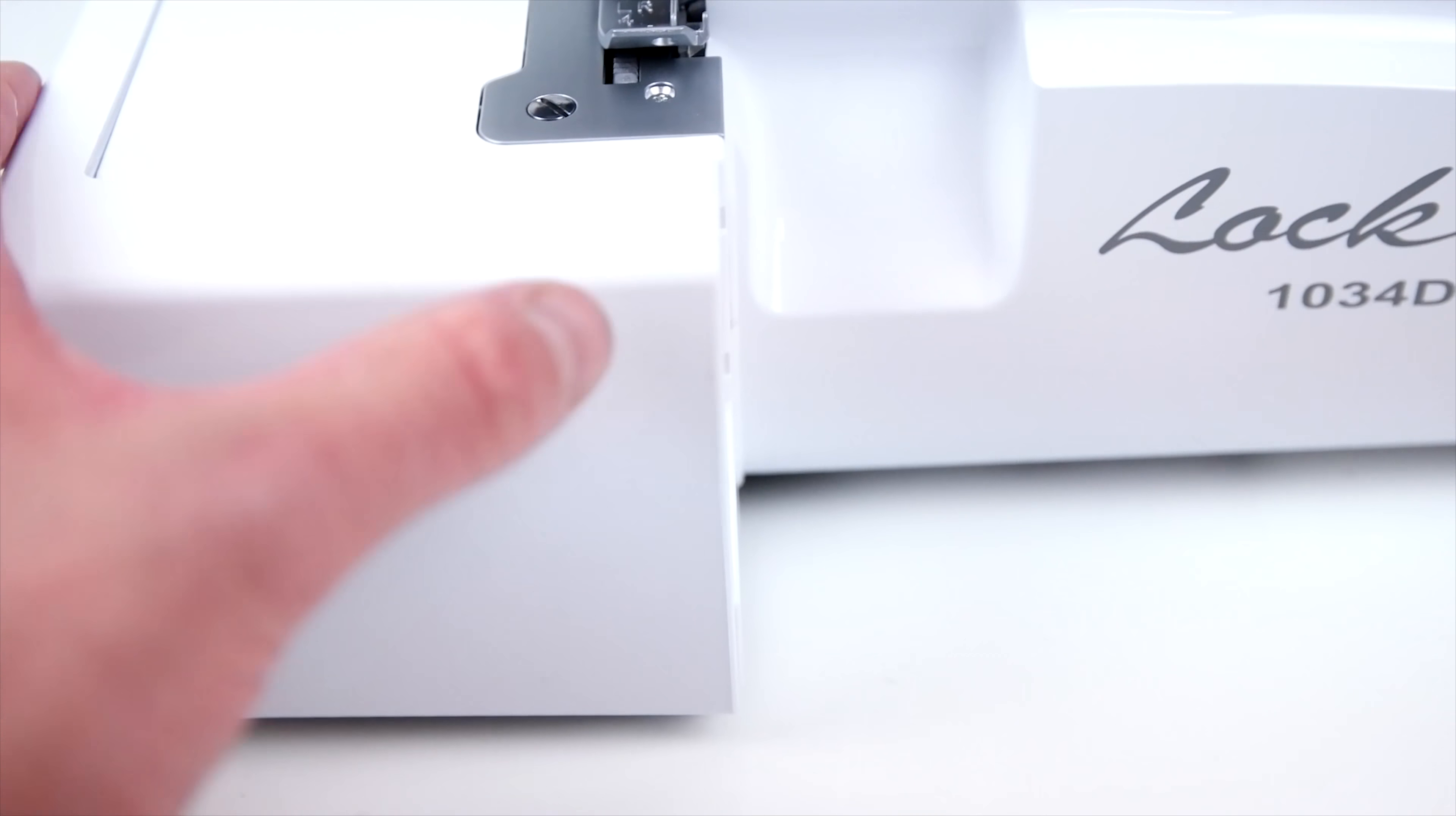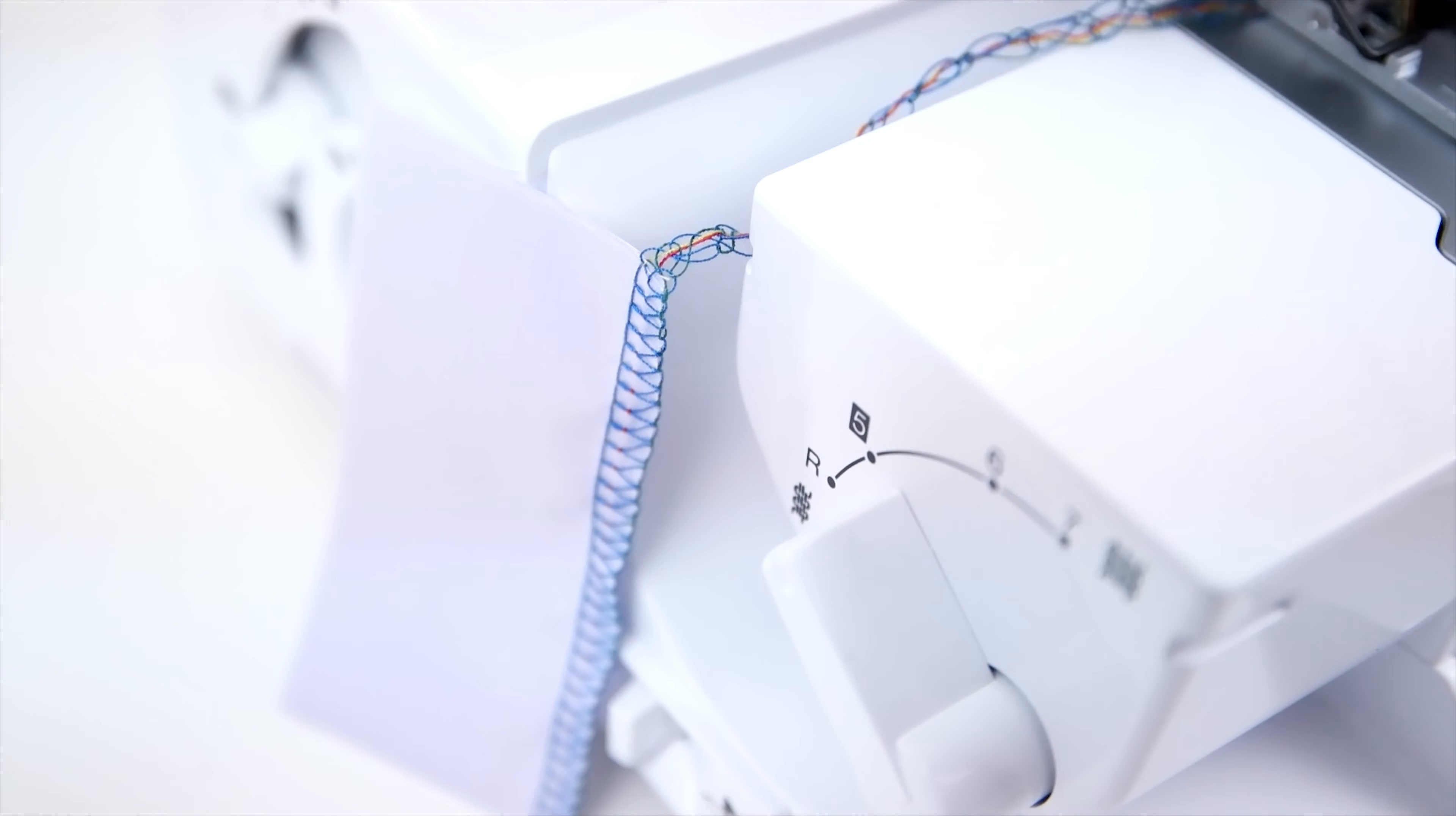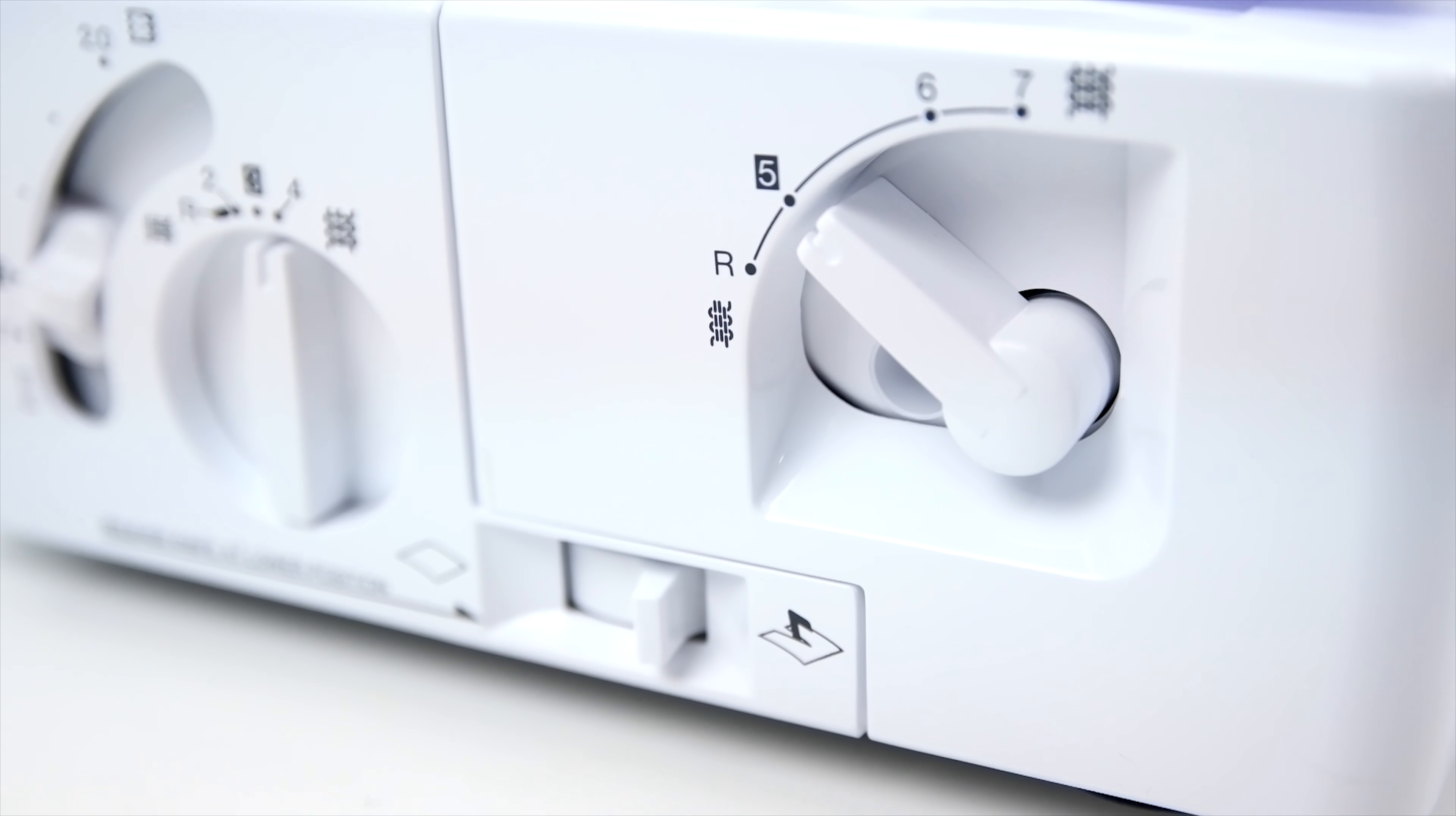The removable bat extension is great for doing cuffs and sleeves, super easy to pop on and off. There are easy-to-use side controls for stitch width, stitch length, and differential feed.